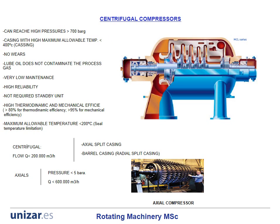Here are the centrifugal and axial compressors. Axial compressors are not very common in process plants. Normally, they compress air at a pressure no higher than 5 bars. The main application of this machine is for gas turbines, to compress the air in the combustion chamber at a pressure higher than 15 bars. The centrifugal compressor can be considered the king of the compressors, and its technology has been improved very rapidly.